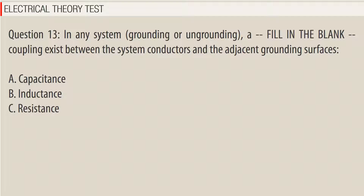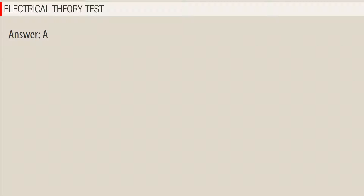Question 13: In any system, grounded or ungrounded, a _____ coupling exists between the system conductors and the adjacent grounding surfaces. A. Capacitance, B. Inductance, C. Resistance. Answer: A.